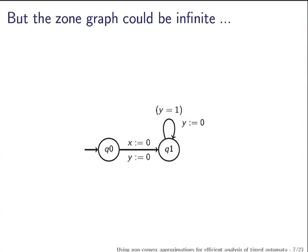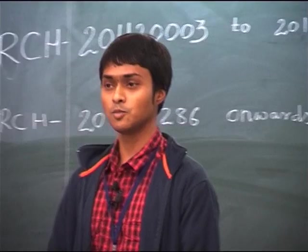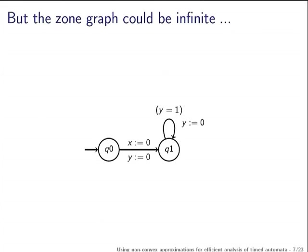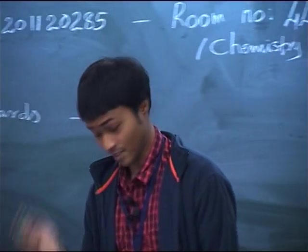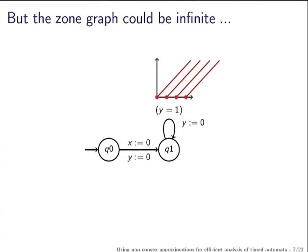There is one problem: the zone graph might not terminate. For example, you reach state Q1 with both valuations equal to 0, elapse time, then take the self-loop — only the valuation with Y equal to 1 can take it, and after the transition Y is reset to 0. You then elapse time again, reaching a new zone. You end up visiting an infinite number of zones; the algorithm is non-terminating.